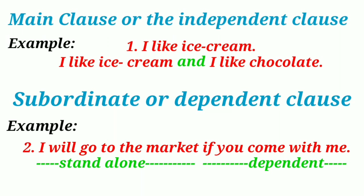Subordinate clause. A subordinate clause contains a subject and a verb but it depends on the main clause for making sense, as it does not make complete sense on its own. For example, 'I will go to the market if you come with me' is a complex sentence. It has a main clause — 'I will go to the market' — and a subordinate clause — 'if you come with me.' The main clause makes complete sense on its own, but the subordinate clause does not make complete sense on its own and depends on the main clause for its complete meaning.